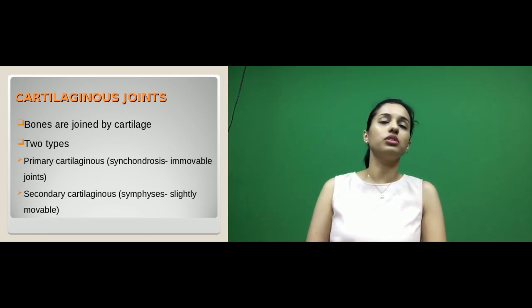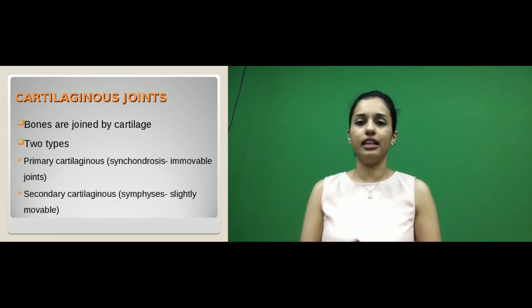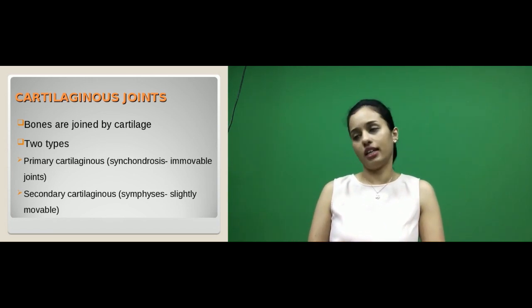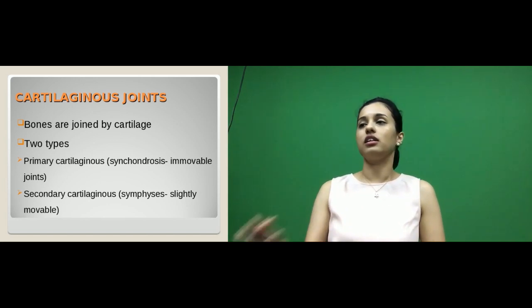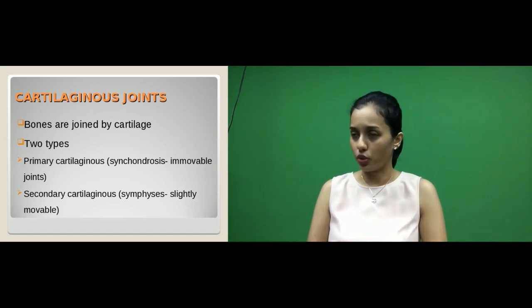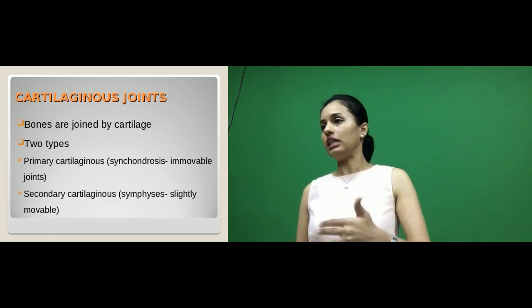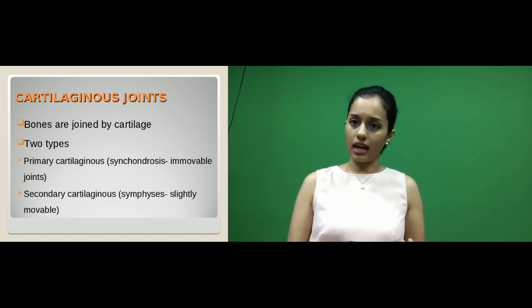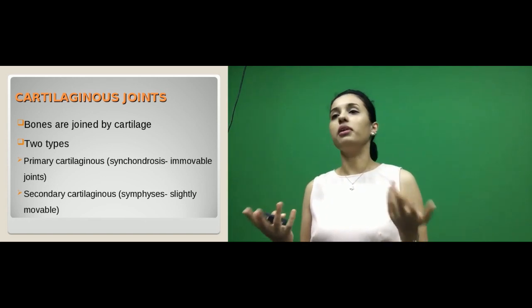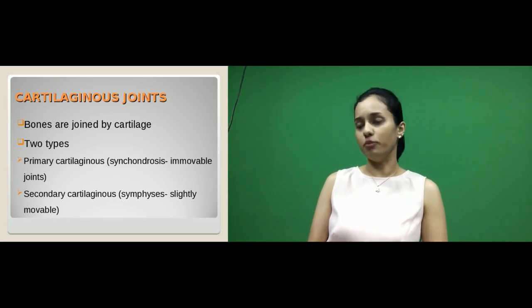Now coming to the next type of joint: cartilaginous. The name tells you that the bones are joined by a cartilage. There are two subtypes: primary cartilaginous joints, also called synchondrosis, and secondary cartilaginous joints, also called symphysis. Among these two, primary cartilaginous joints are immovable and mainly seen in greater numbers in children, while secondary cartilaginous joints are slightly movable.